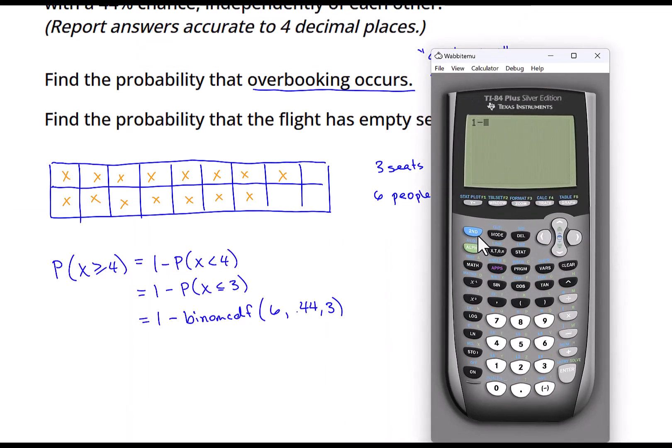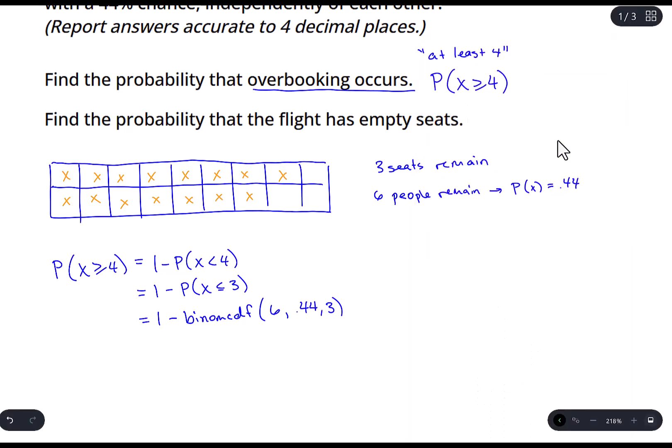So 1 minus binom CDF. We need to scroll down until we get to that. And we had six trials, probability of success is 0.44 and X is 3. So 0.239, we'll do three decimal places. I guess the question said four, but that's okay. Three is fine here because it's the principle that matters.